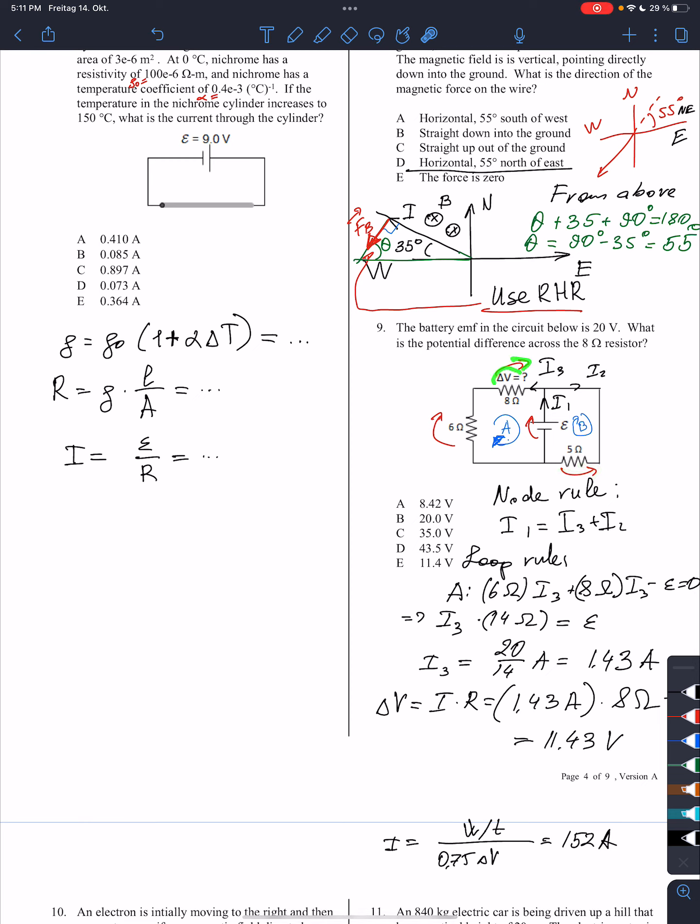For the 8 ohm resistor, for the 5 ohm resistor. All right, so the next point is that the potential difference, its direction across the battery is from negative to positive terminal as shown over here.